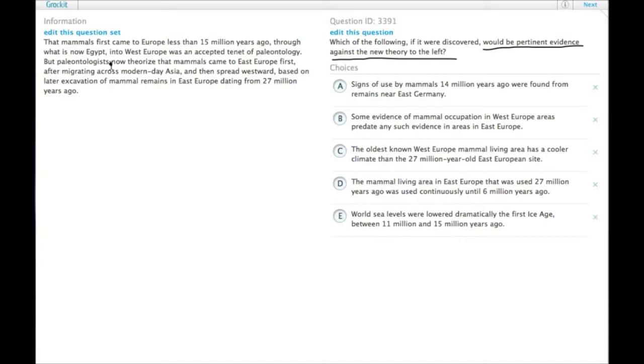What is the new theory? Paleontologists now theorize that mammals came to East Europe first. And then there's a bunch of details about this and millions of years and stuff like that that really just kind of gets away from the argument.